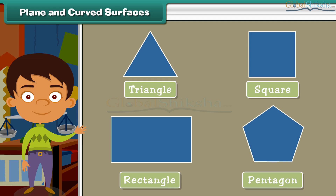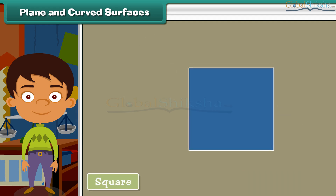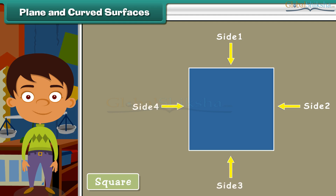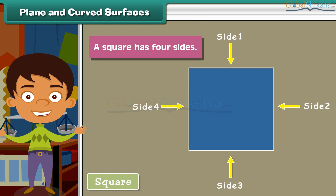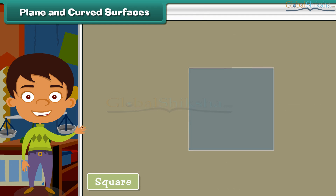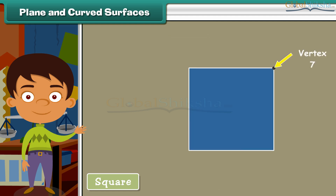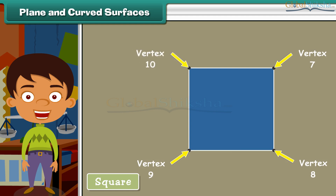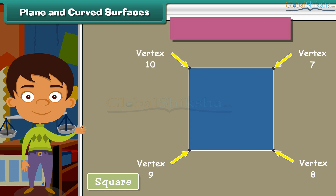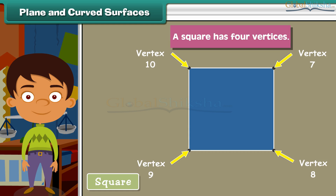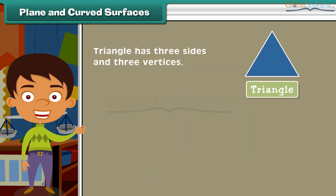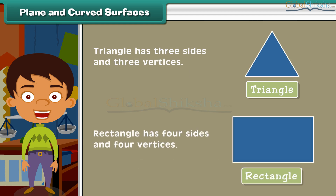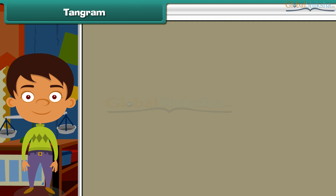Looking at a square: the four arrows indicate its four sides. The point at which two sides meet is called a vertex. A square has four vertices. Similarly, a triangle has three sides and three vertices, and a rectangle has four sides and four vertices.